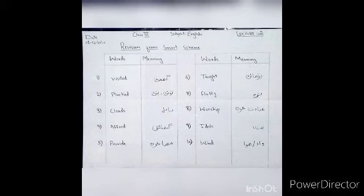Number fourth word is afford. Its meaning is gunjaish. Means to be able to pay for.